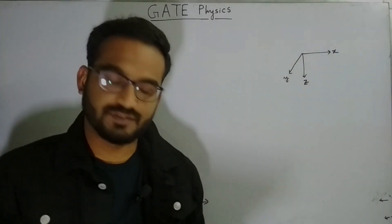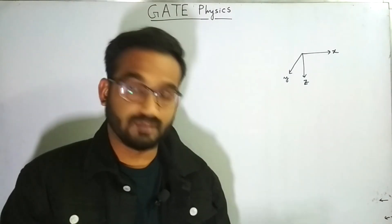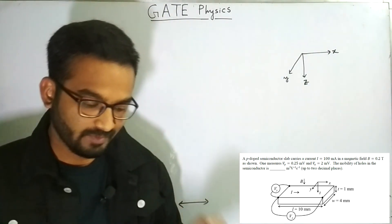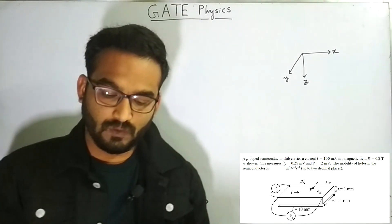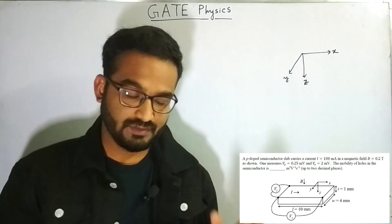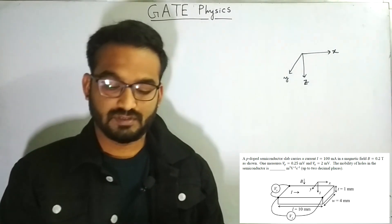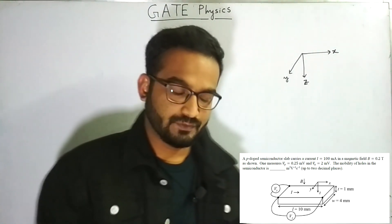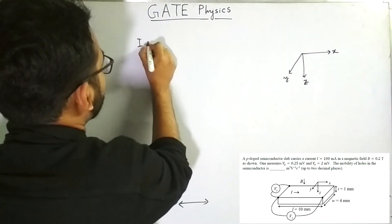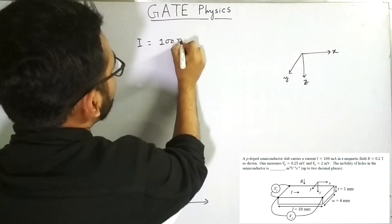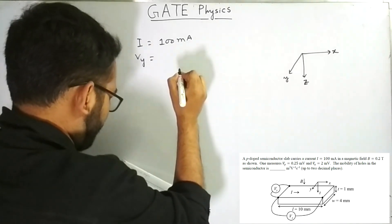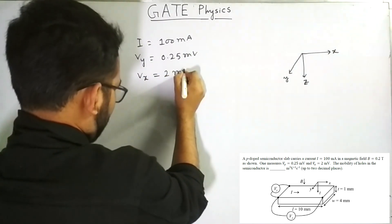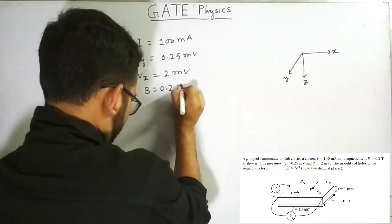Now let's discuss a problem from solid state physics — specifically from the Hall effect. The problem reads: a p-doped semiconductor slab carries a current i equals 100 mA in a magnetic field B equals 0.2 tesla. One measures Vy equals 0.25 mV and Vx equals 2 mV, as shown in the figure. The mobility of holes in the semiconductor is to be found.